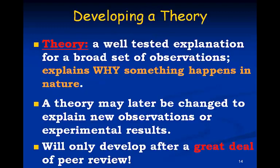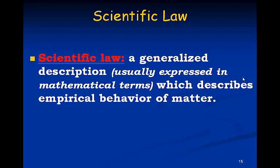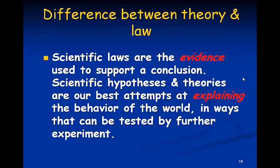Finally, if we have a strongly supported hypothesis, we can develop a theory. A theory is a well-tested explanation for a broad set of observations. A theory only happens after a great deal of peer review. A theory is essentially our best explanation for something. This is different from a law, which is a generalized description, which describes the behavior of matter. Scientific laws are the evidence used to support a conclusion. Scientific hypotheses and theories are our best attempts at explaining the behavior of the world.